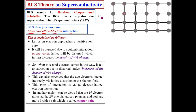Now let us consider an electron approaching a positive ion core. When this electron approaches the core, these positive ions will interact with the electron via Coulombic interaction — the electron will be attracted due to Coulombic interaction. As a result, the lattice will be distorted, which in turn increases the density of positive charge.